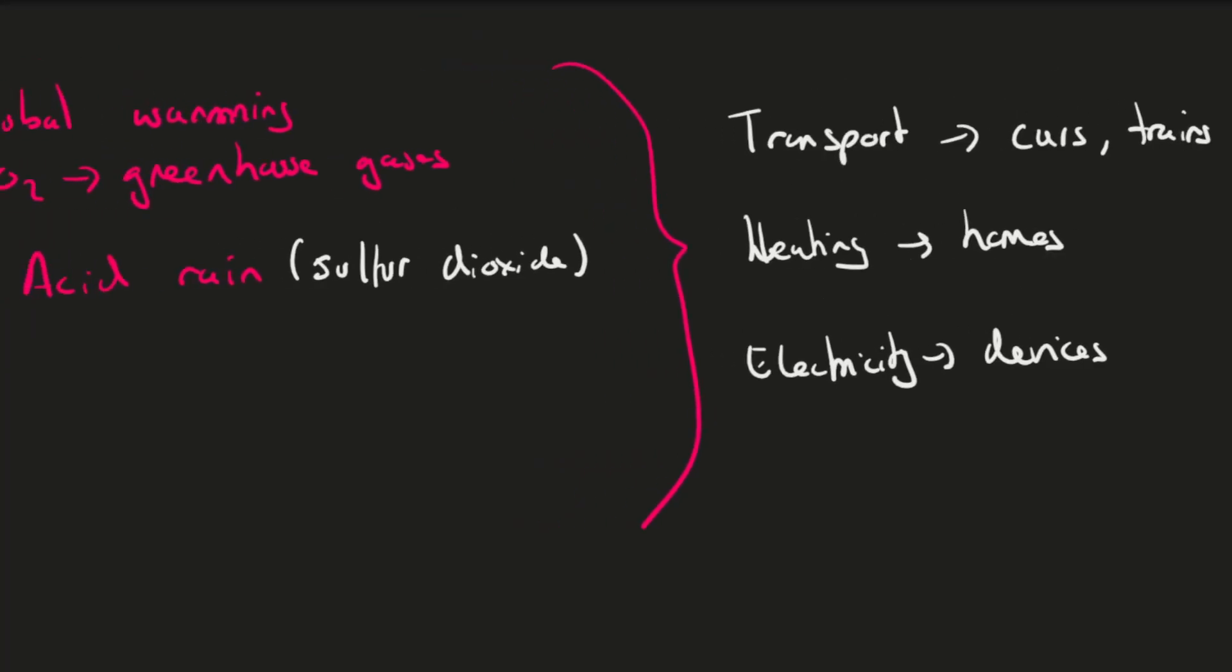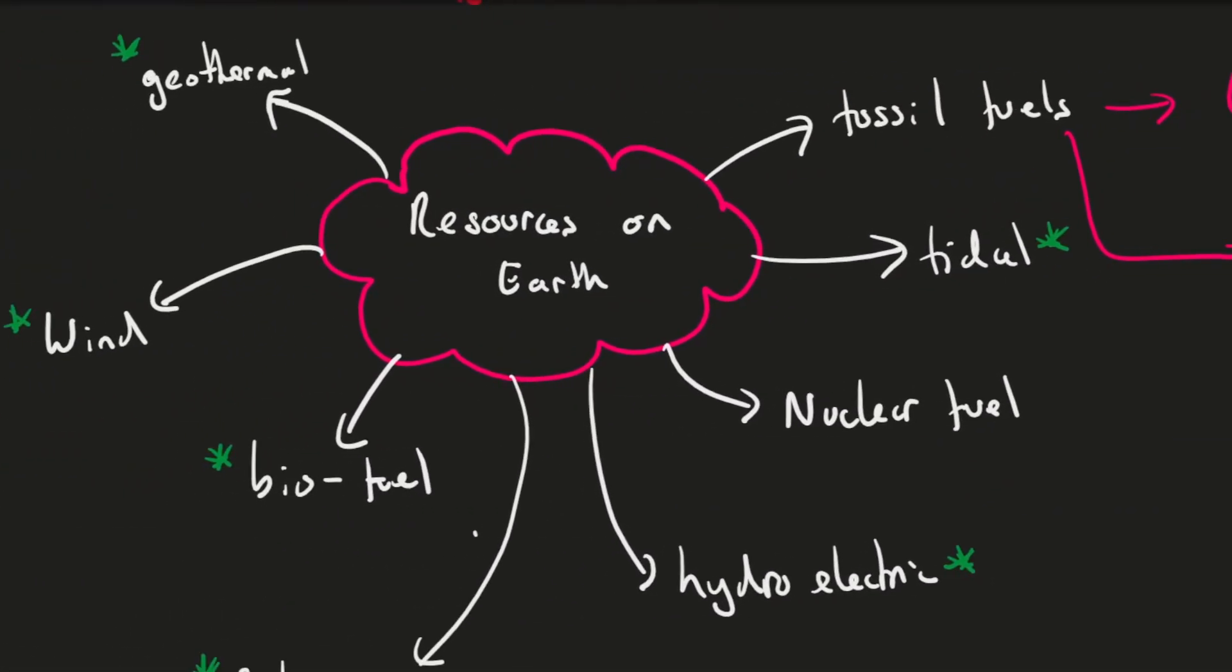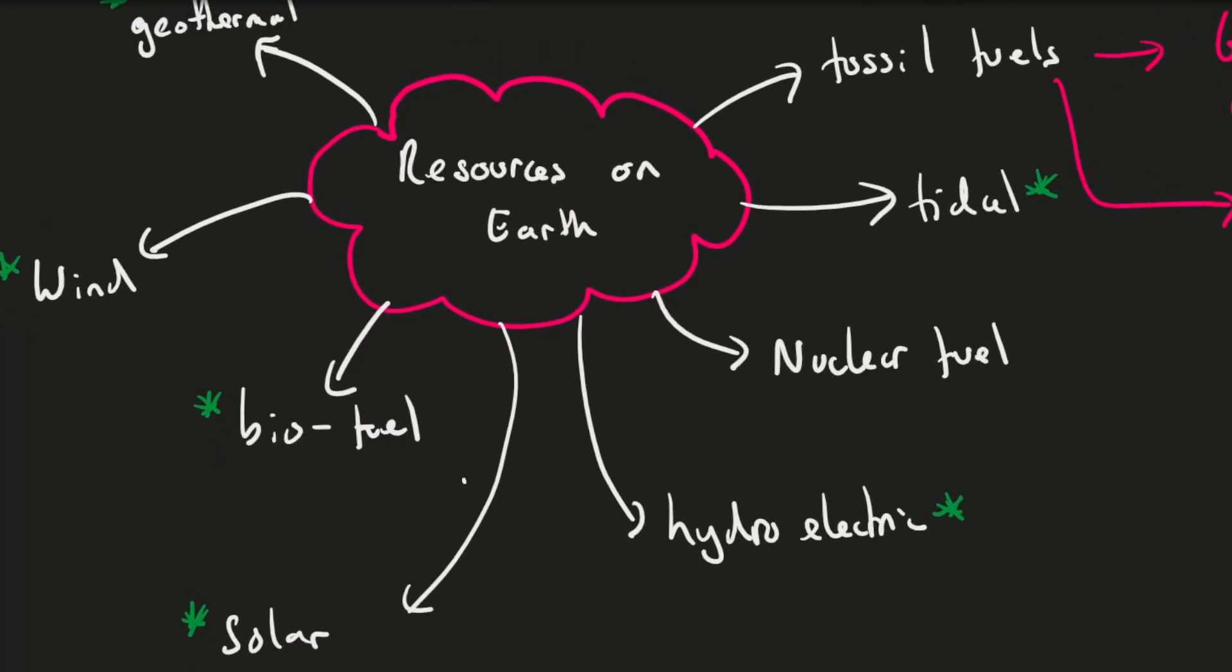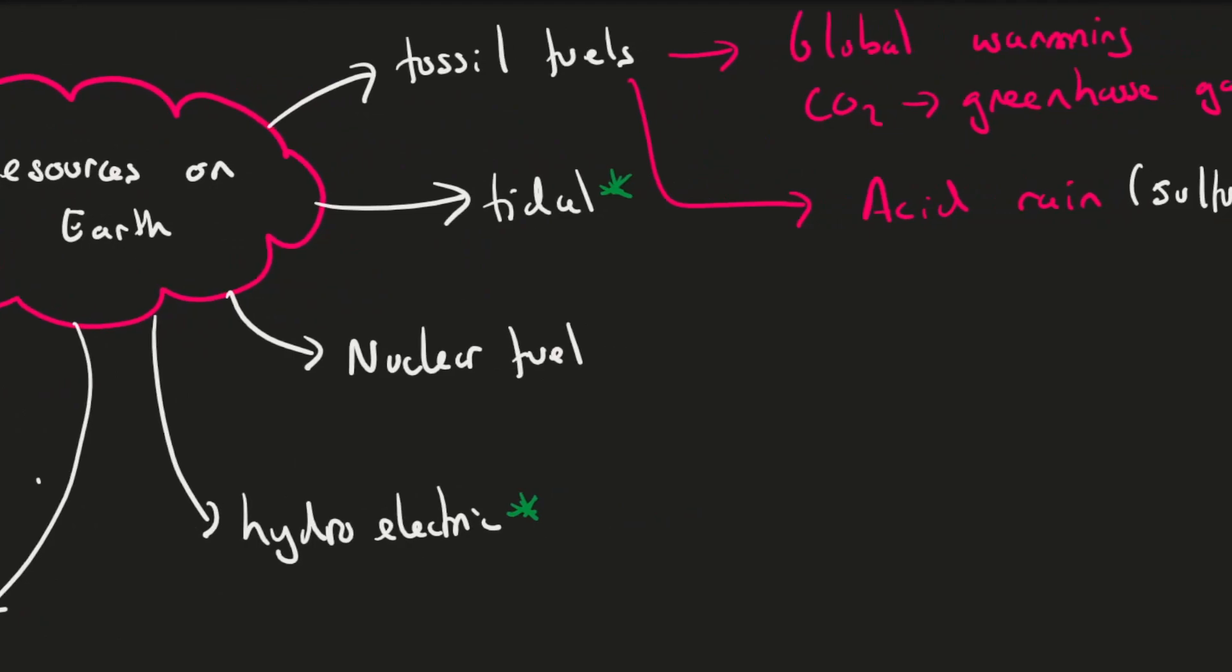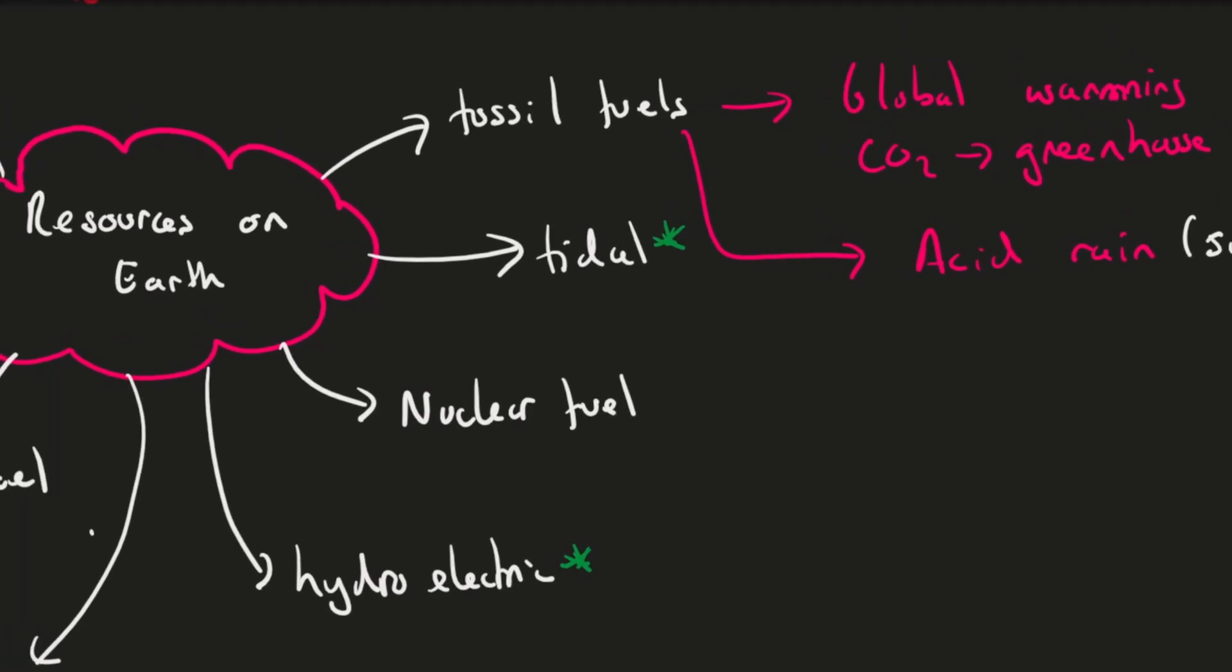And so one thing we can talk about generally is this pattern of the use of these energy resources. Previously, we have pretty much been heavily reliant as a human race on fossil fuels. And now we are slowly moving towards more renewable resources, such as tidal, geothermal, wind, and biofuel. And that is mainly due to the effects that scientists have observed from the use of fossil fuels. So things like global warming and acid rain, and also the fact that fossil fuels are non-renewable, and they are running out.